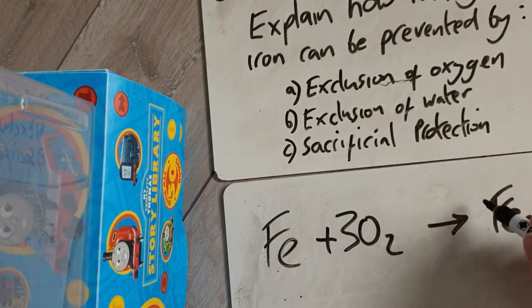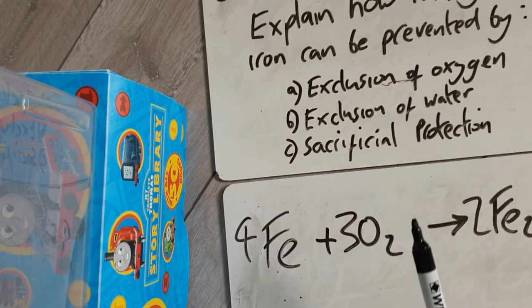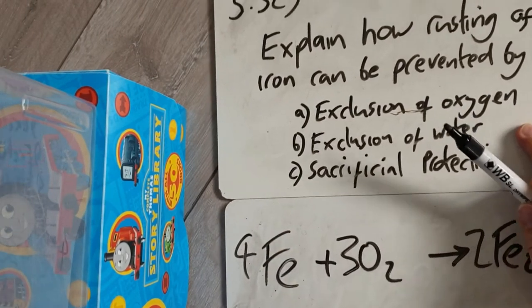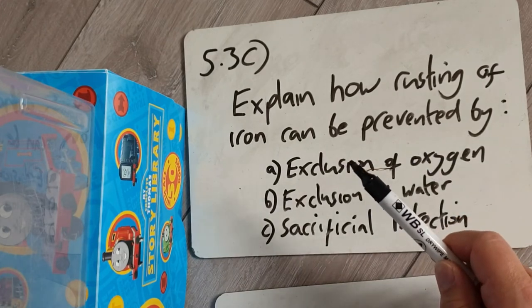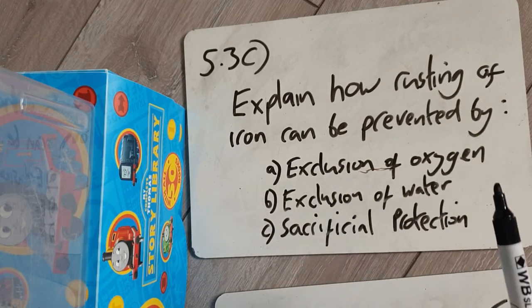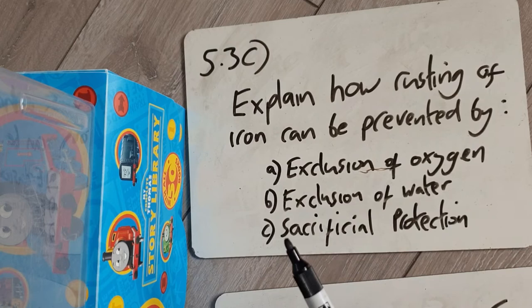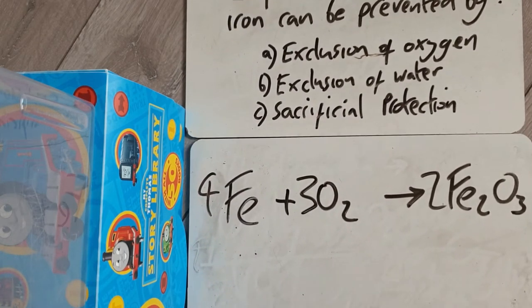Iron needs both oxygen and water to rust: Fe + O2 → Fe2O3. 'Exclude' means keep out — if you can keep out the oxygen or keep out the water, you can stop the iron from rusting.